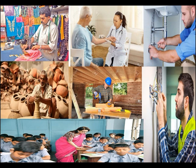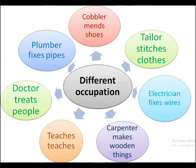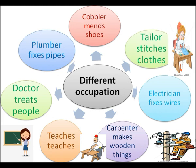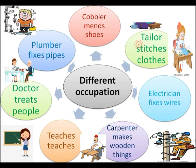Now look at this picture carefully and observe two things: the type of job you see in the picture, and how that job helps us. We find that different people are doing different jobs — a tailor stitches clothes, an electrician fixes wires, a carpenter makes wooden things, a teacher teaches us, a doctor treats people, a plumber fixes pipes, and a cobbler mends our shoes. We depend on these people when we need them.